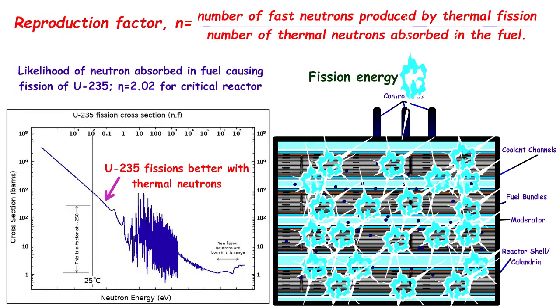Finally, comes the reproduction factor, eta, which is the ratio of the number of fast neutrons produced by thermal fission divided by the number of thermal neutrons absorbed in the fuel.